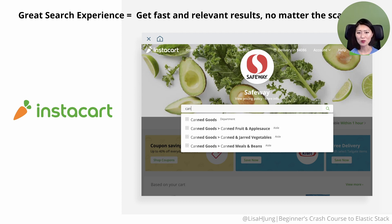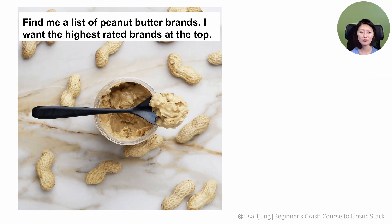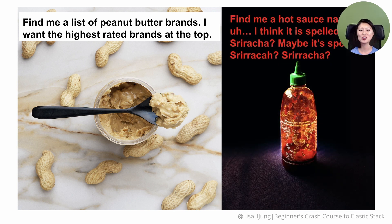Another important factor in search experience is relevancy. The whole point of search is finding relevant data fast. We want to be able to fine-tune our search experience to get the information we want, with the most relevant results at the top and the least relevant at the bottom. For example, a customer searching for peanut butter might want to see results sorted from highest to lowest rated brands. Or what if the customer is searching for sriracha hot sauce and misspells it? We still want to pull up relevant results, even though the spelling doesn't exactly match the product data.